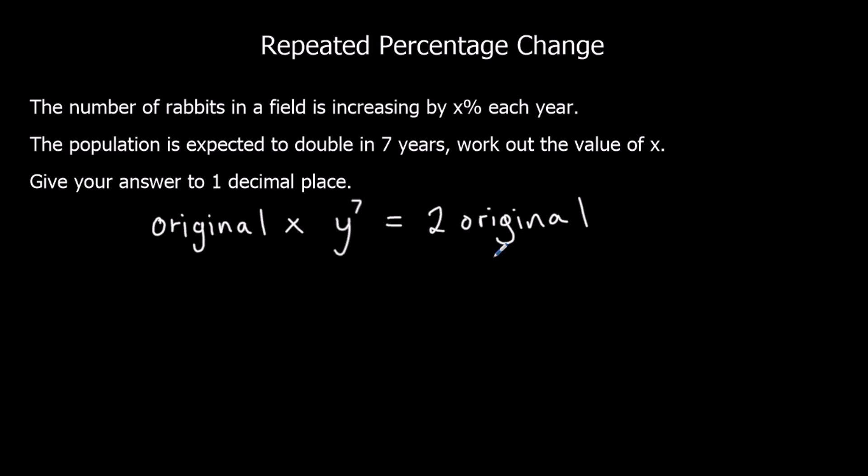So the original amount times something to the power of seven equals two lots of the original amount. So if I divide both sides by the original amount, I'll get Y to the power of seven is two. So I want to know what to the power of seven is two. And that will tell me what Y is. And to do that, I want to do the seventh root. The seventh root of two.